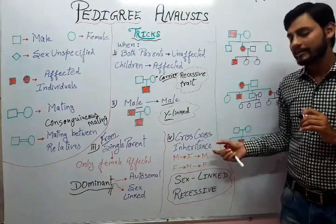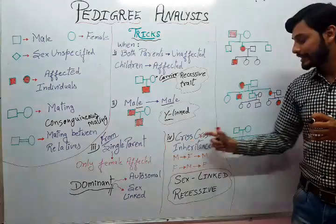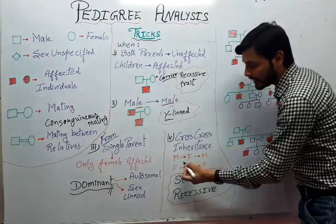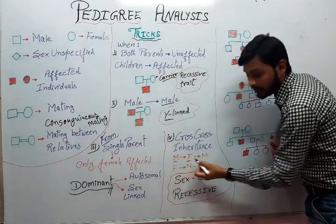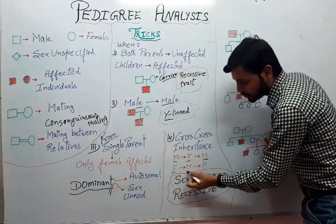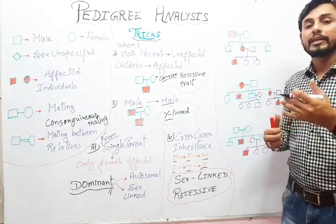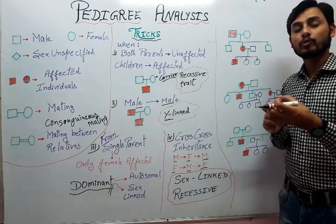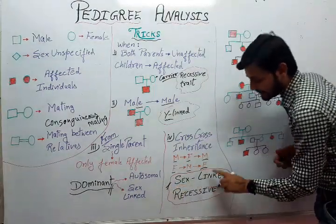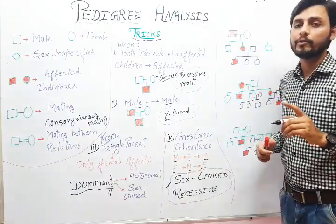The fourth important trick is criss-cross inheritance — where characters pass from male to female, then back to male; or from female to male, then back to female. In these cases, we directly conclude that the trait is a sex-linked recessive character.